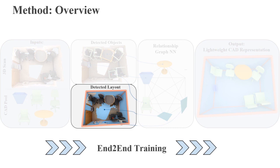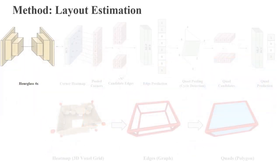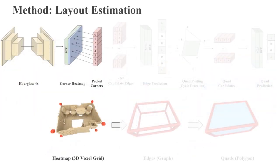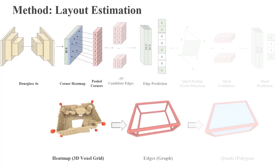To predict scene layouts, we first predict corner points in the form of heat maps. From the detected corners, we propose edge candidates by pairing each corner with every other corner, and then classify which edges are valid.